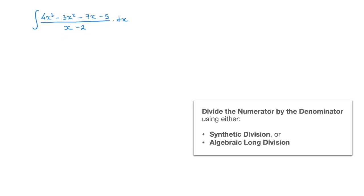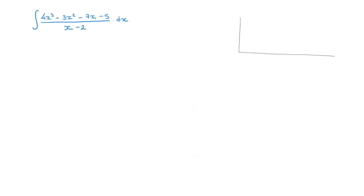For that, I'll go ahead and use synthetic division. So I draw a table, something looking like this. At the top of this table, I write each of the coefficients of the polynomial we have on the numerator. So those are 4, negative 3, negative 7, and negative 5.